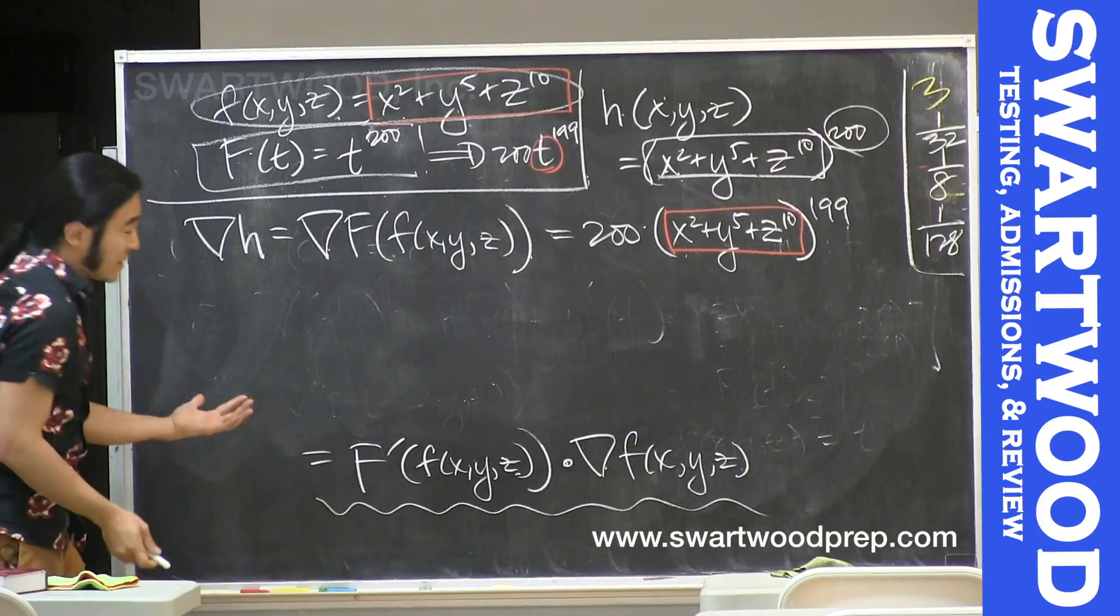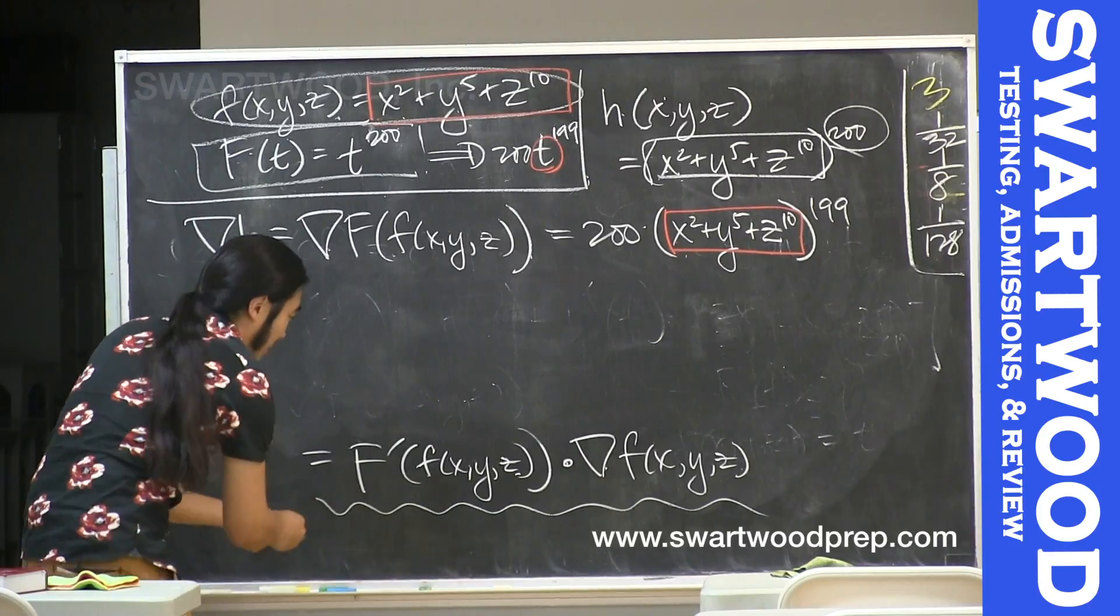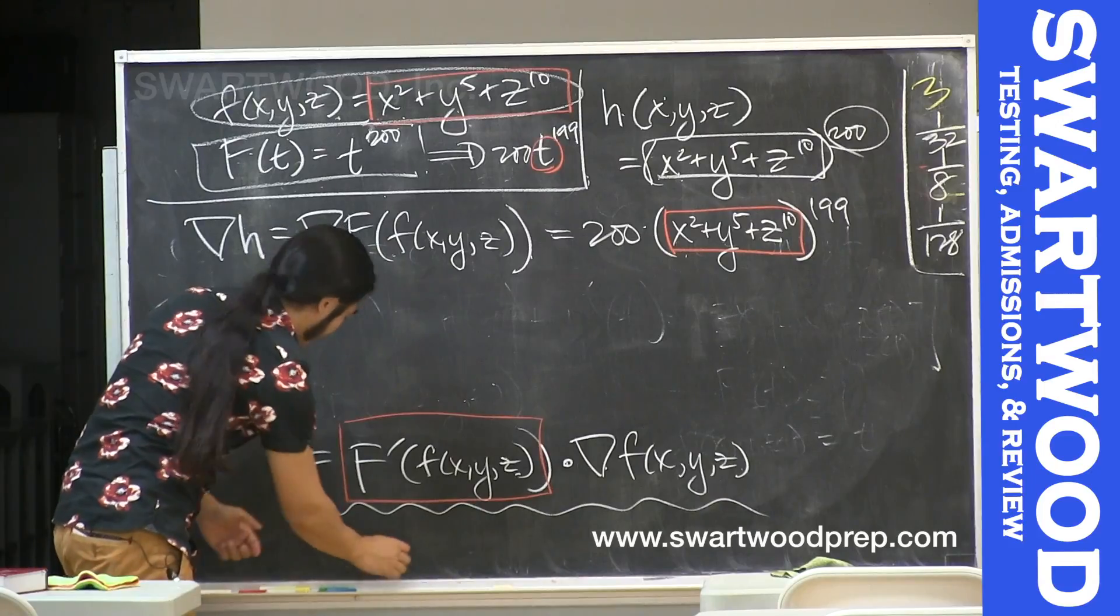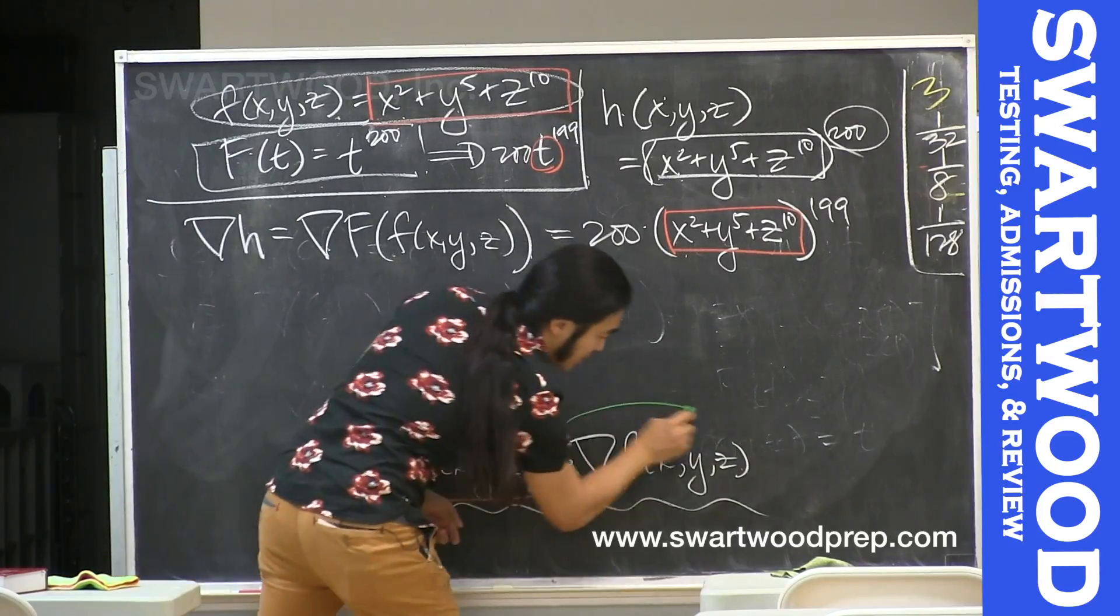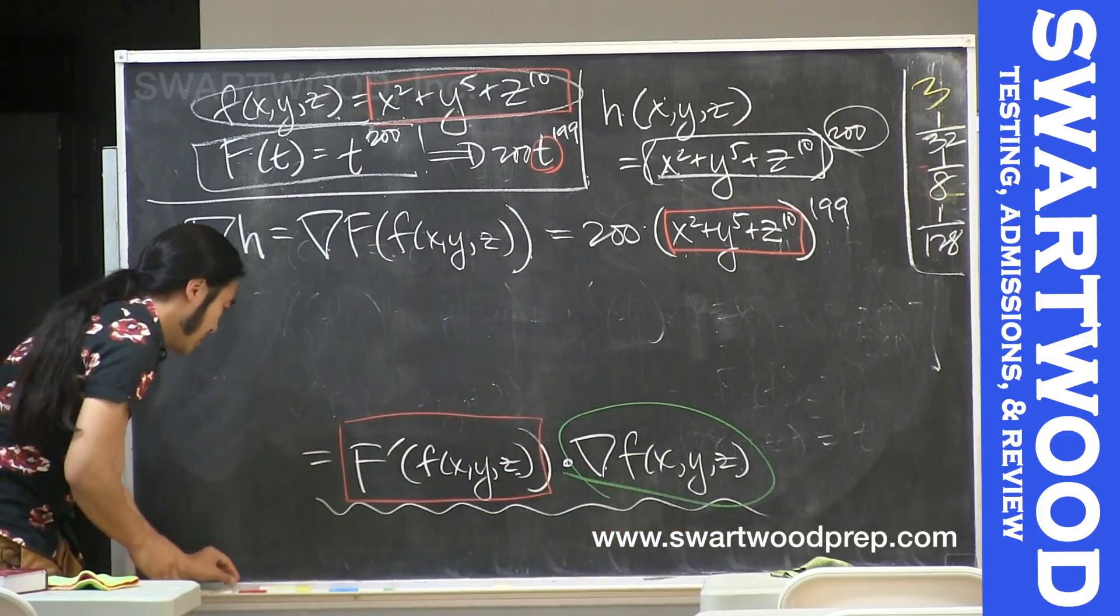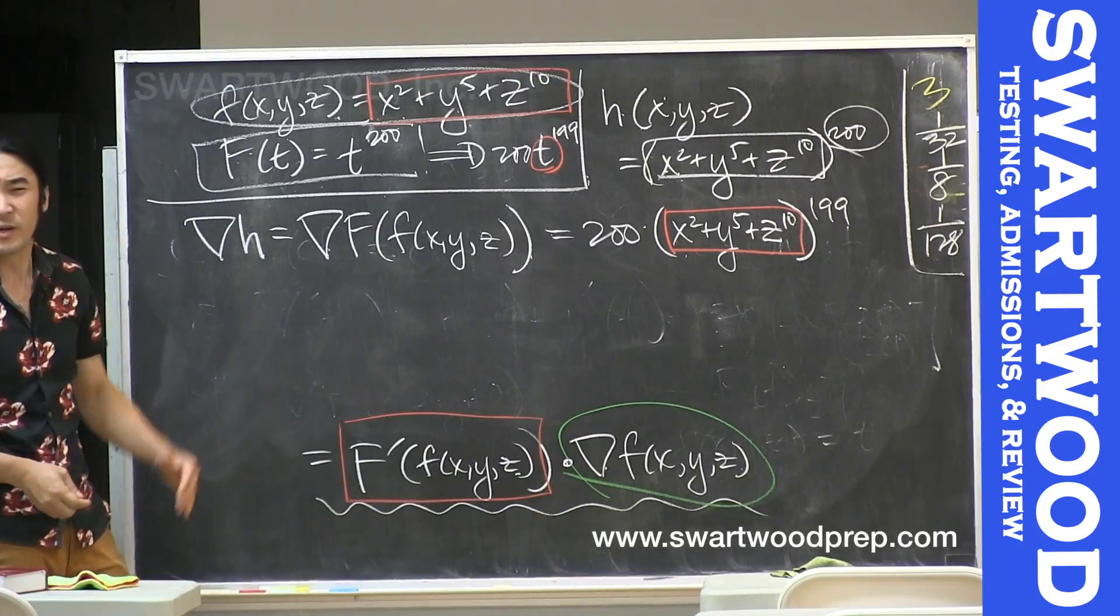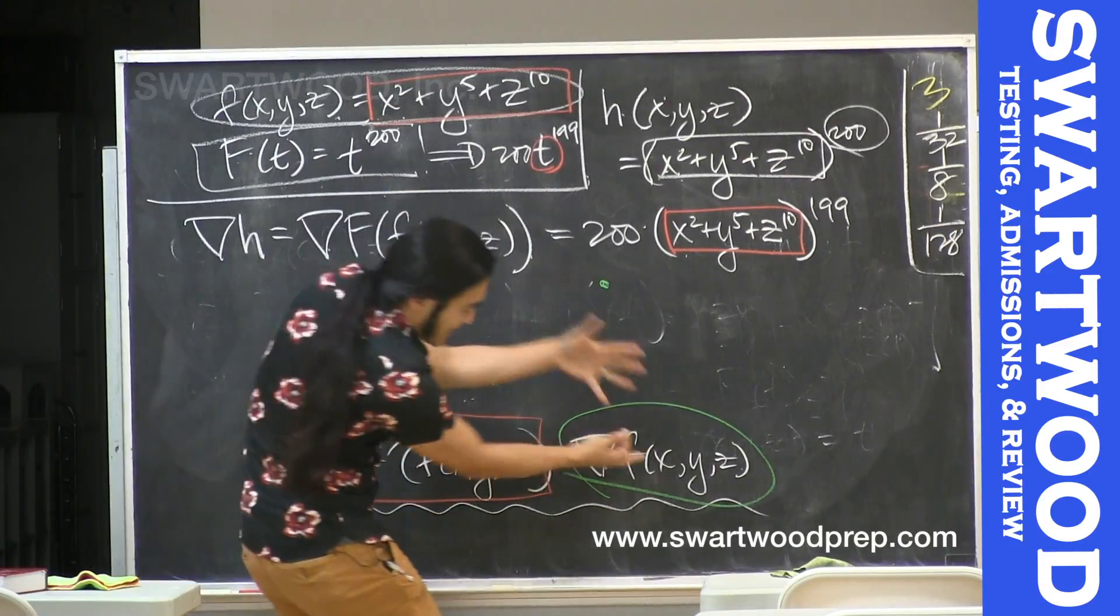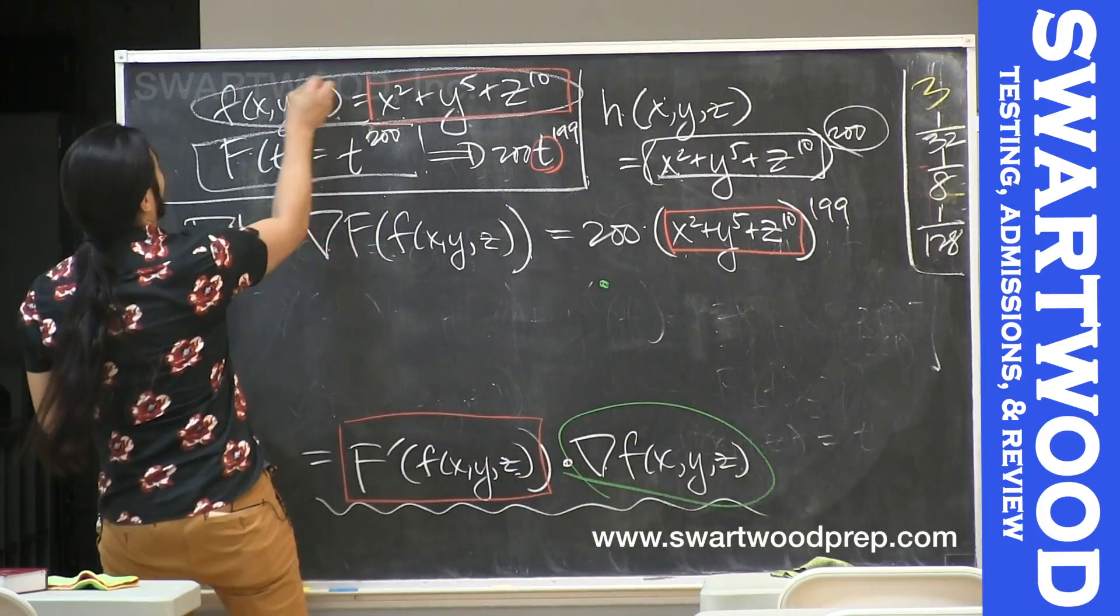But we're not done, right? We've got to take that guy. That would be this part. So we just did this. And we need to multiply him by the gradient. Let's run it in green. So if you multiply this guy, we're going to multiply him by the gradient of this function, the function we're plugging in. And that's again going to be this guy.